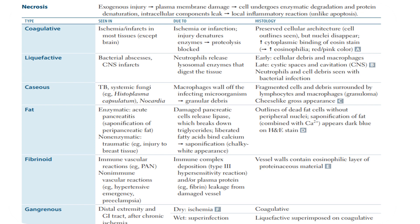In coagulative necrosis, there is ischemia or infarction in most tissues except the brain. The tissue shape and cells are preserved because there is lysis of the enzymes — ischemia or infarction injury denatures enzymes and proteolysis is blocked. The histology shows preserved cellular architecture, cell outline is seen, but nuclei disappear, and there is increased cytoplasmic eosinophilia — a red or pink color.